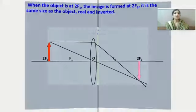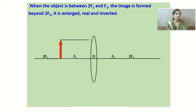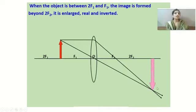When the object is between 2F₁ and F₁: applying our rules — first ray parallel to principal axis after refraction passes through F₂; second ray through the optical center goes undeviated. The image is formed beyond 2F₂. The image is enlarged, real, and inverted.